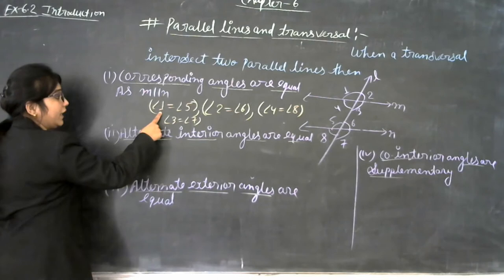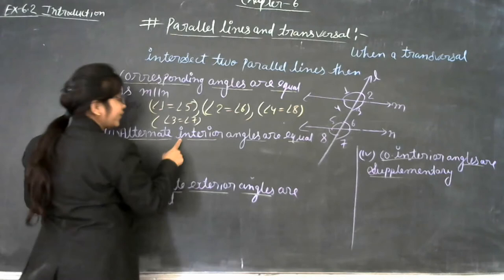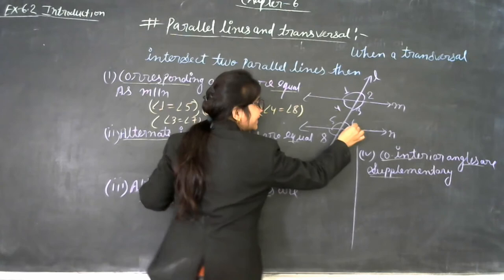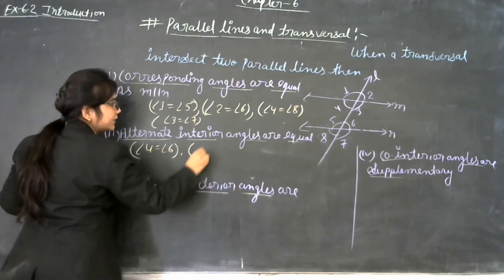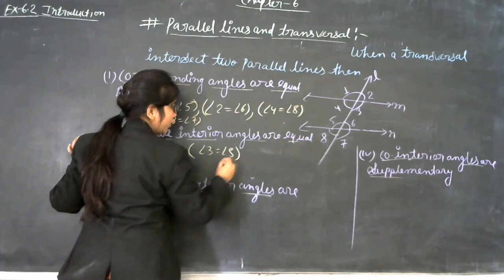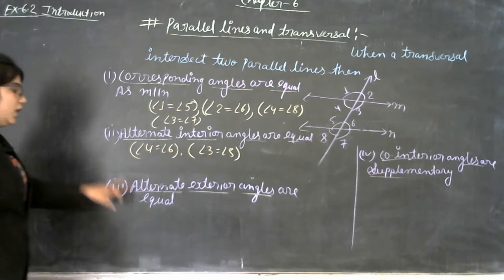When a transversal intersects two parallel lines, the alternate interior angles are also equal. So angle 4 is equal to angle 6, and angle 3 is equal to angle 5. These are the alternate interior angles.